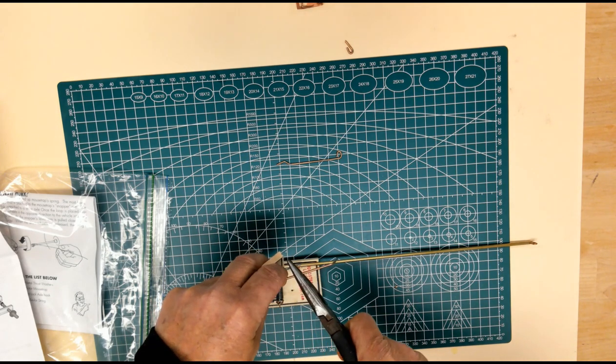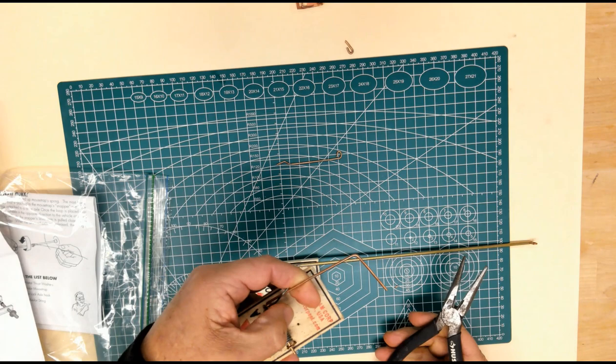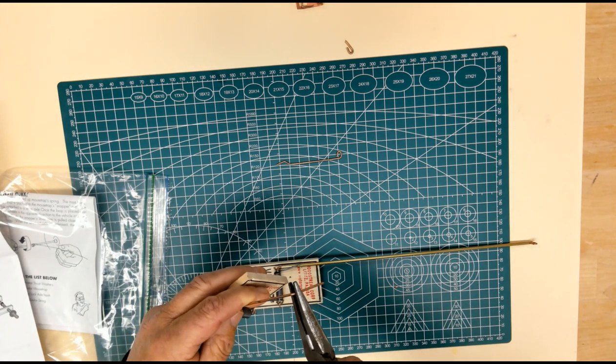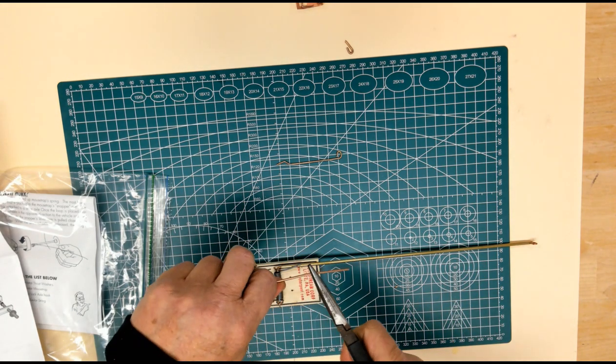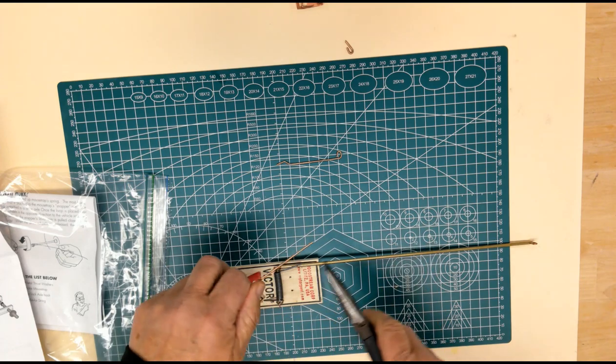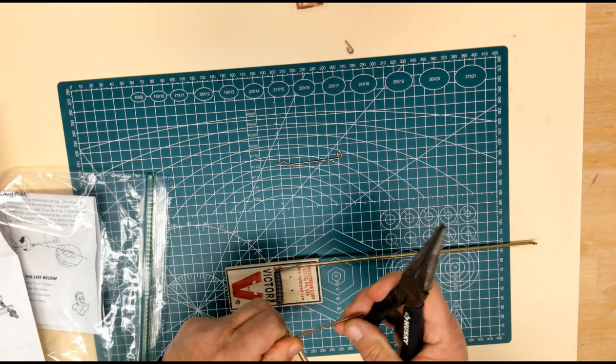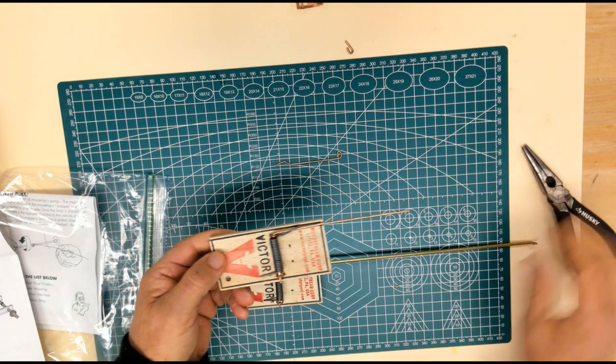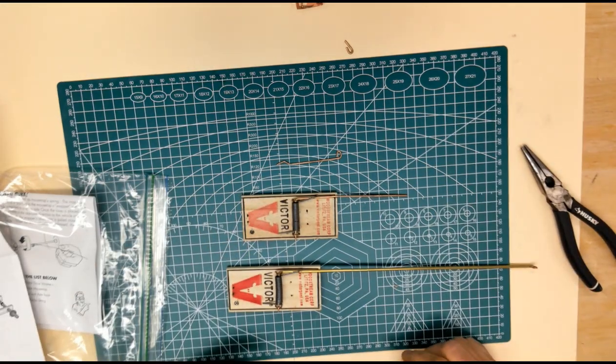And just get it at the corners right here with your needle nose pliers. And again, twist it slowly until it's pretty straight. And then do the other corner as well. And now this is going to be pretty straight. It doesn't have to be perfectly straight.